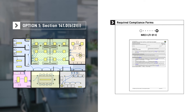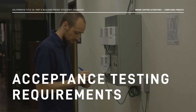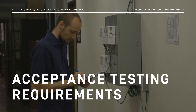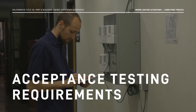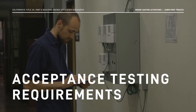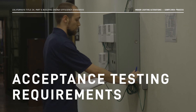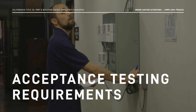This completed form and the permit application are submitted to the enforcement authority, like the city or county building department responsible for the project. Once the permit is approved, the lighting system is installed and the Certificate of Installation NRCI-LTI-01-E is filled out by the contractor and submitted to the building department. Before receiving a Certificate of Occupancy, certain lighting controls must undergo acceptance testing.